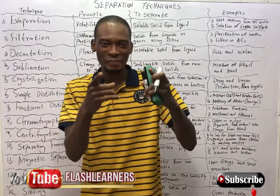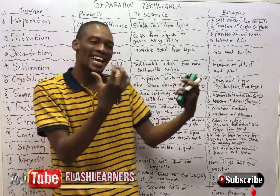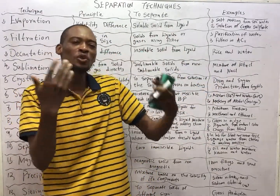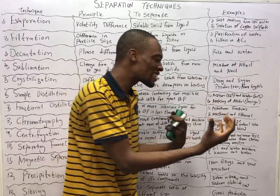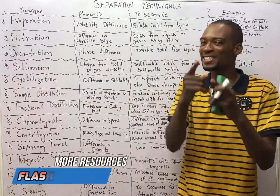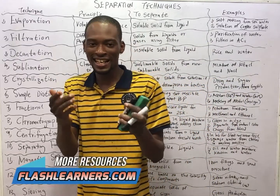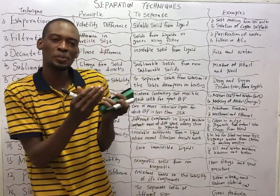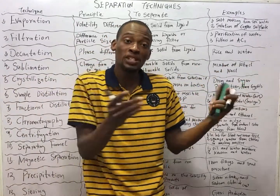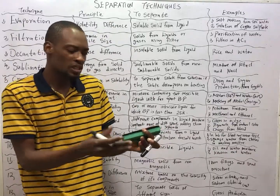Now, what is matter? Matter is everything that has mass — not weight — and occupies space. Mass is different from weight in the sense that mass is the quantity of substance or quantity of matter a body or an object possesses, while weight is the earth's pull on an object.